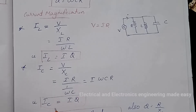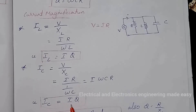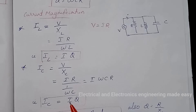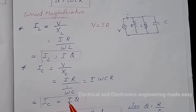So current magnification occurs in the case of a parallel resonant circuit. The current flowing between the capacitor and inductor is much higher than the current supplied by the source. Therefore we have a resonant current step-up in a parallel resonant circuit.